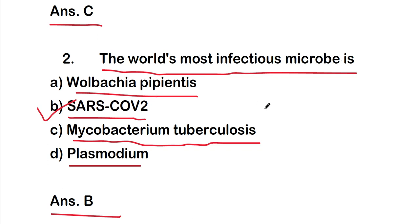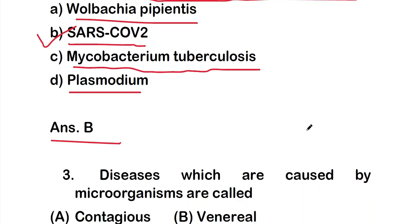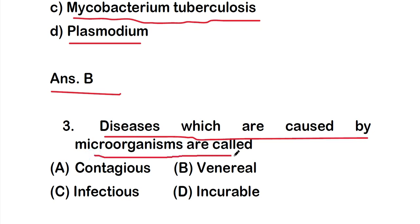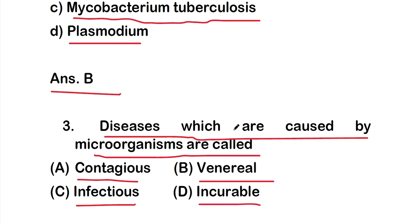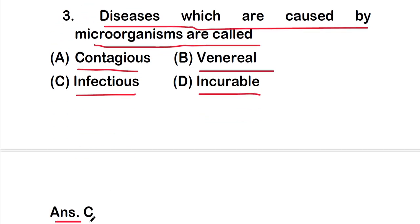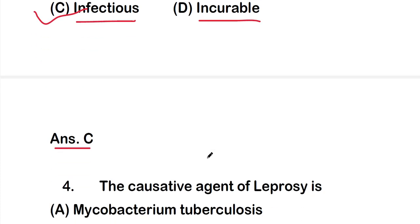Question 3: diseases which are caused by microorganisms are called — option A: contagious, option B: venereal, option C: infectious, or option D: incurable. The right answer is option C, infectious. Diseases caused by microorganisms are called infectious diseases.